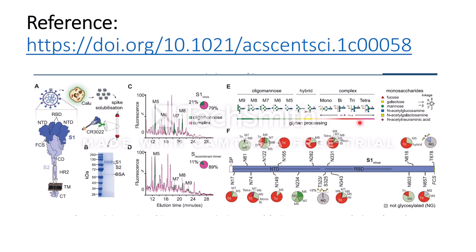Complex glycans are represented in red. Another panel shows the glycan sites present in the S1 region — for example, N17 and N61 are glycan sites in the S1 domain within the receptor binding domain. Pie charts represent the probability of each site being occupied by different kinds of glycans. For example, at N61, there is a higher probability of occupation by M5 oligomannose than by M7, M6, or complex glycans.